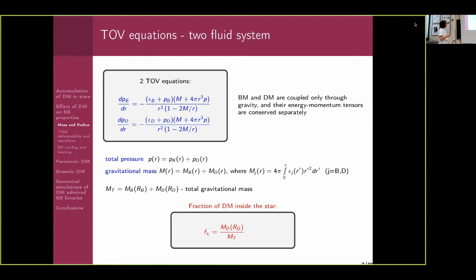Because interaction between baryonic and dark matter can be neglected, the TOV equation can be split into two components: one for baryonic matter and one for dark matter. The only difference is that the total mass is the sum of the baryonic and dark matter components, and the pressure is also the sum of the two components' pressures. We define the dark matter fraction as the mass of the dark matter component divided by the total mass of the star.